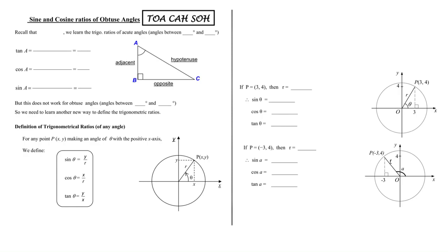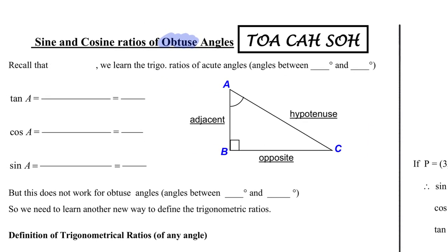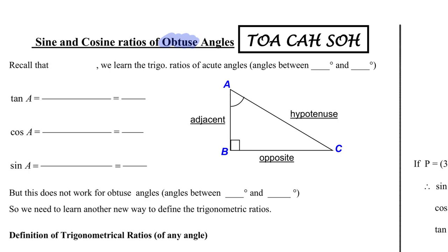Welcome to this video where we are looking at the sine and cosine of obtuse angles. Previously we learned the trigonometric ratios of acute angles, which are angles that go between zero degrees and 90 degrees.